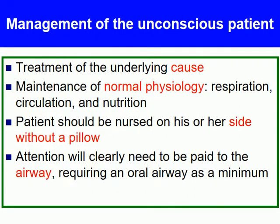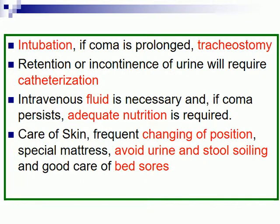Management of the unconscious patient: treatment of the underlying cause, maintenance of normal physiology including respiration, circulation, and nutrition. The patient should be nursed on their side without a pillow; attention is directed to the feet and the airway, requiring an oral airway as needed. Intubation if coma is prolonged, and tracheostomy if necessary. Retention or incontinence of urine may require catheterisation. Intravenous fluid is necessary, and if coma persists adequate nutrition is required. Care of the skin, frequent changing of position, avoiding urine and stool soiling, and good care of the bowel.